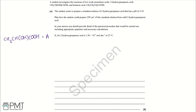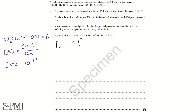Firstly, I've written a little abbreviation on the side to tidy up our working out. We want to work out the concentration of A using [H⁺]² divided by Ka. We also use [H⁺] = 10^(−pH). So we calculate 10^(−2.19) squared, divided by 1.38 × 10⁻⁴, which is our Ka value for 2-hydroxypropanoic acid at 25°C. That gives a concentration of 0.0302 mol dm⁻³.